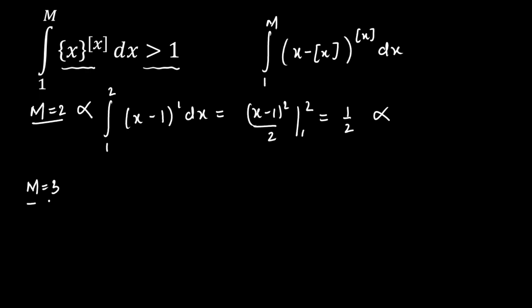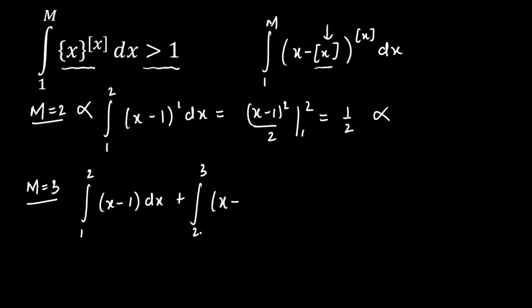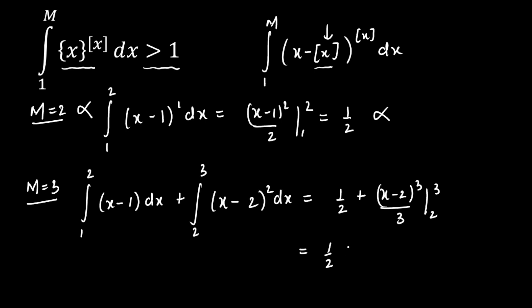For m = 3, we break the integral at integer points because gif is discontinuous there. We get the integral from 1 to 2 of (x − 1)¹ dx plus the integral from 2 to 3 of (x − 2)² dx. The first part equals 1/2 (already calculated). The second part evaluates to (x − 2)³/3 from 2 to 3, giving 1/3 − 0 = 1/3. So the total is 1/2 + 1/3 = 5/6, which is not greater than 1. This case is also rejected.